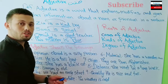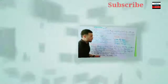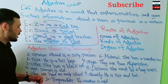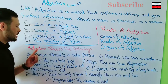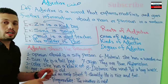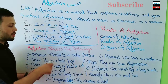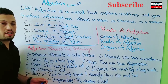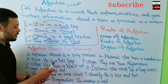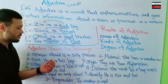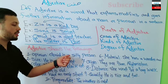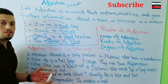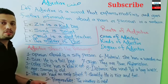Another example: 'Obite is a silly person.' Here 'silly' is the adjective that modifies the noun 'person' and gives us more information about Obite.